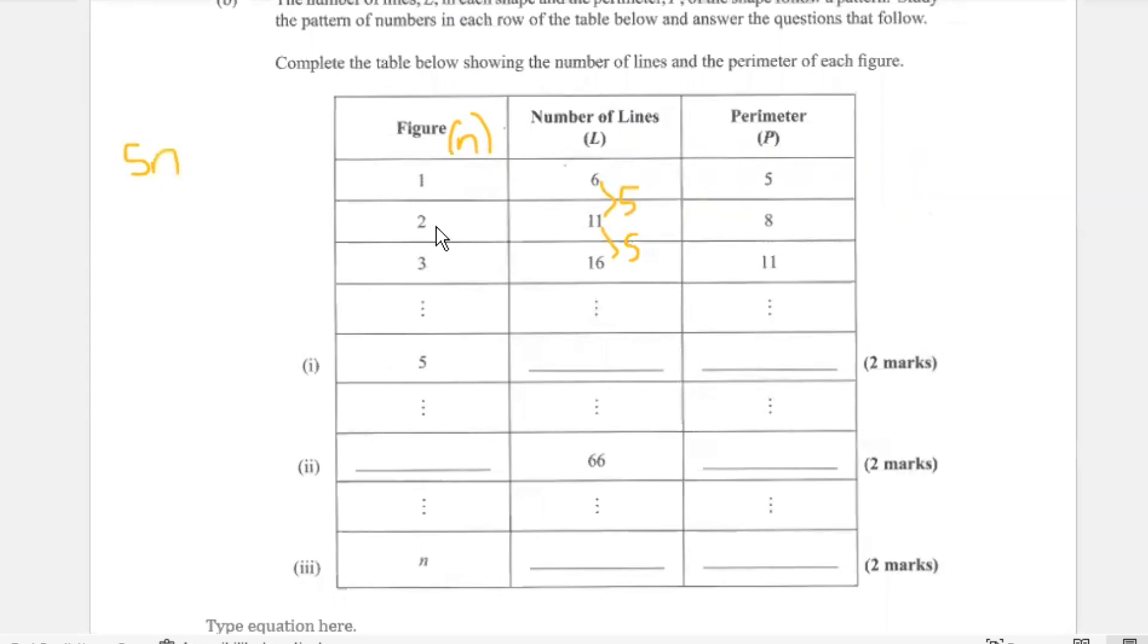If I say 5 times 2, I get 10 but what I really needed was 11. If I say 5 times 3, I get 15 but what I really needed was 16. So you'll realize that in each instance I am always short by 1. So therefore I can now add 1 to this formula and test it again. 5 times 1 is 5 plus 1 gives me 6, now I'm correct. 5 times 2 is 10 plus 1 gives me 11, now I'm correct. 5 times 3 is 15 plus 1 gives me 16.